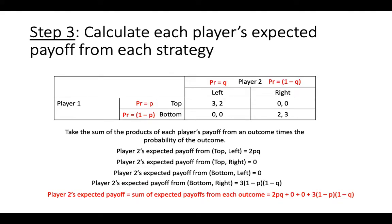Similarly, player 2's expected payoff is 2 times p times q, plus 3 times the quantity 1-p times the quantity 1-q.